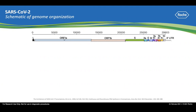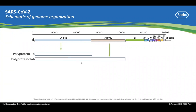The translation of ORF-1A produces polyprotein 1A. However, because of the presence of a ribosomal frameshift site at the intersection between ORF-1A and ORF-1B, from time to time the host ribosome can bypass the stop codon of ORF-1A and continuously translate into ORF-1B, producing the longer polyprotein 1AB. The genes encoding the structural proteins and accessory proteins near the 3' end will not be translated in this phase of translation.